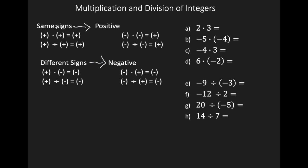When your signs are the same, your answer will be positive. So if you multiply two positives, your answer is positive. If you multiply two negatives, your answer is positive. The same rule goes for division: if you divide two positive integers, your answer is positive, and if you divide two negative integers, your answer is positive.